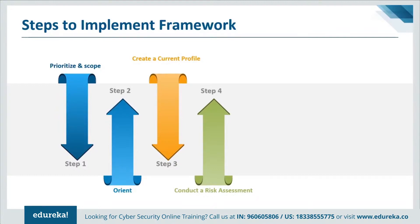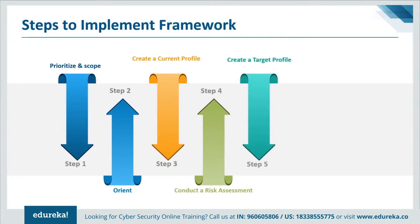The fifth step is to create a target profile. The organization creates a target profile that focuses on the assessment of the framework categories and subcategories describing the organization's desired cybersecurity outcomes. Organizations may also develop their own additional categories and subcategories to account for unique organizational risks, and may consider influences and requirements of external stakeholders such as sector entities, customers, and business partners when creating a target profile. The target profile should appropriately reflect criteria within the target implementation tier.